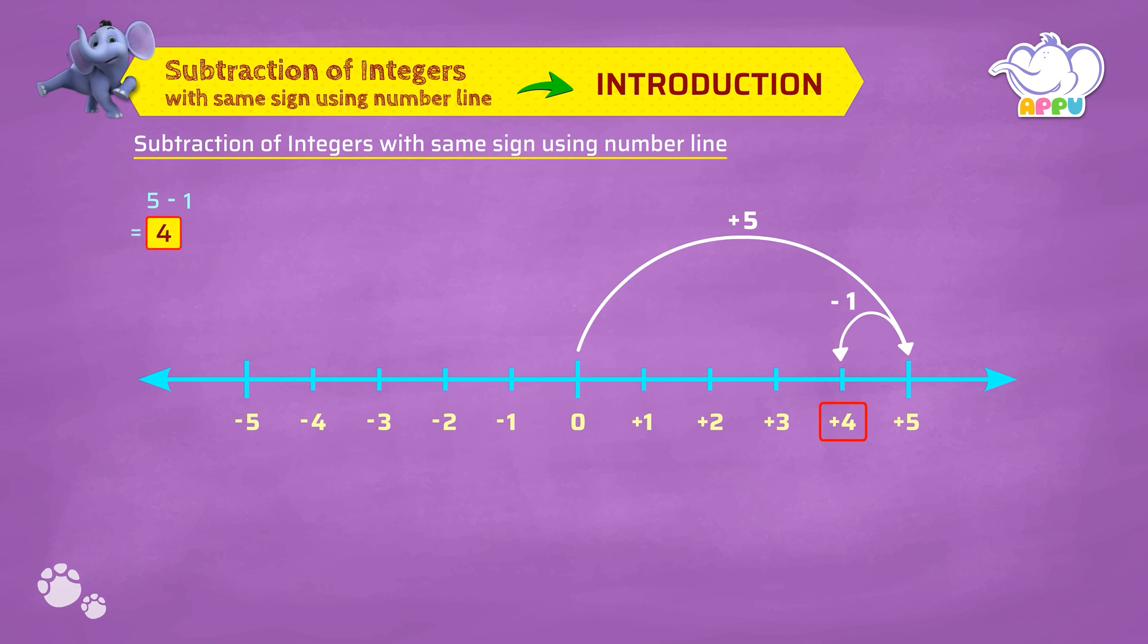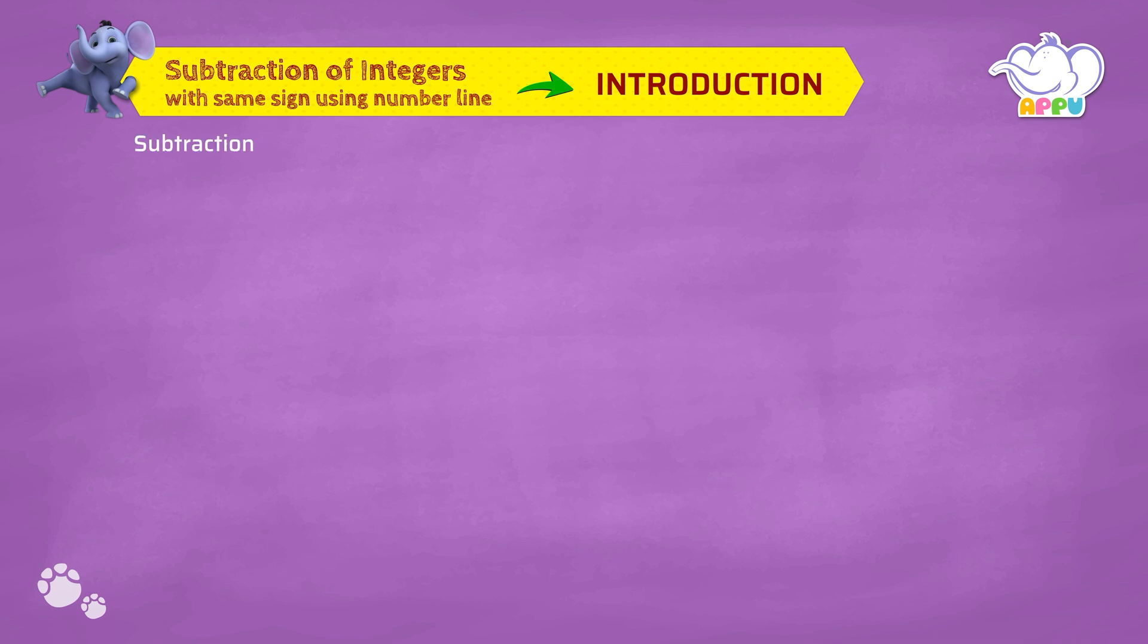This is how we subtract integers with the same sign. Let's look at another example to subtract integers with both being negative numbers using the number line.